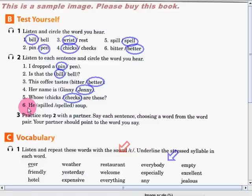Number six. He spilled soup. Wow, very good. The word is spilled. Now, let's try to read the sentences one more time, but now with the correct answer.